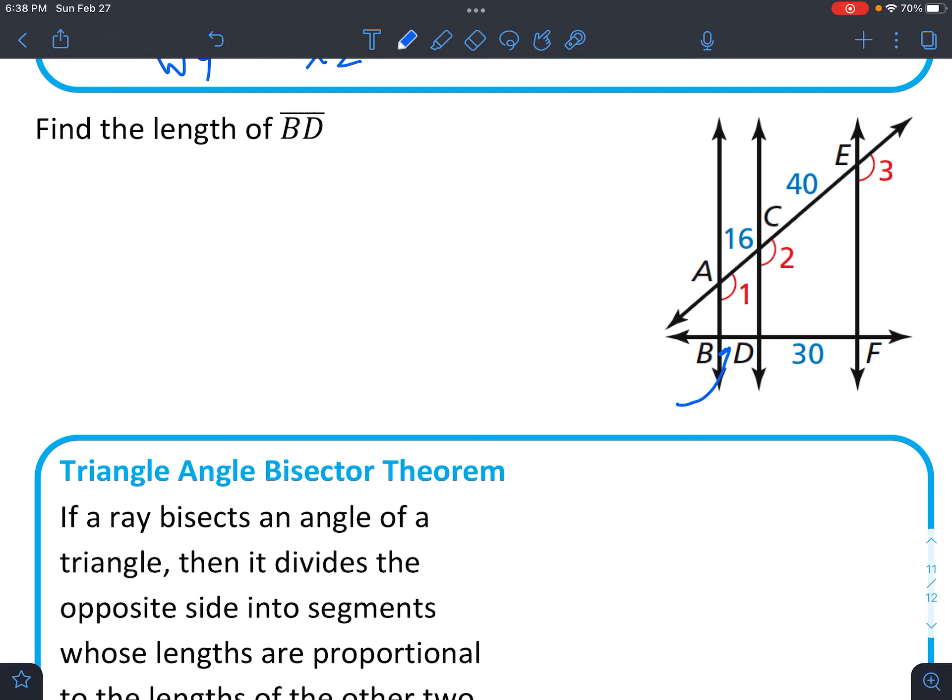All right, so this time it says find the length of BD. It's a little hard to see where we're looking, but it is right here. We'll call this X. And we're going to say X. I usually just like to start off with the one that I'm looking for. So X compares to 30, so the one right next to it. The same way that, take the one across from it on top, the same way that 16 compares to 40.